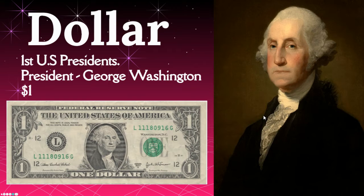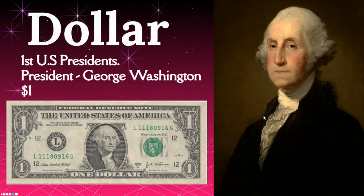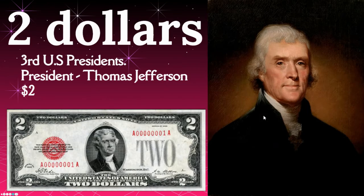Here, we restart the notes. The dollar bill: the first U.S. president, George Washington, is located on it. He's also located on the 25-cent quarter. And if you notice, 100 cents equal one dollar. So if you have 100 one-cent coins, they make a dollar.